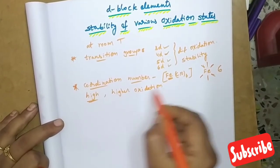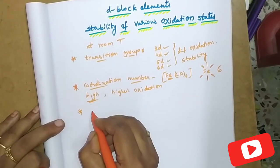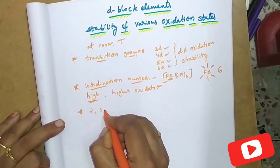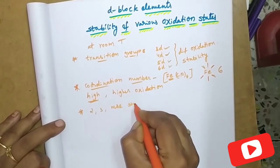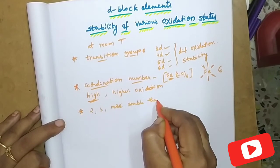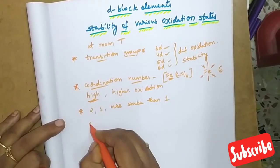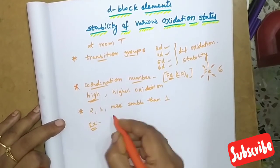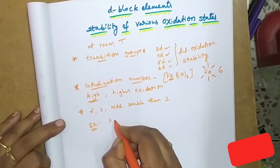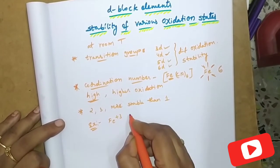In general, second and third rows are more stable than the first one. For different elements with different charges, for example, Fe+3 (ferric) is more stable than Fe+2 (ferrous ion).